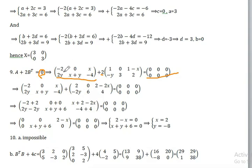Then a minus 2, 0, x. This gives 2, 0, 2, x. Then 2 minus 2, x, minus 2, y, c, x, 4.